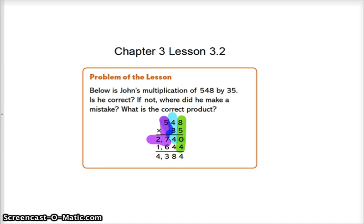Here's where John messed up. Next time he should add the placeholder 0 when he multiplies 3 times 8.